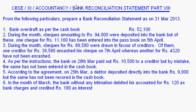As per the instructions, the bank on 28th March paid out rupees 10,500 to a creditor, but by mistake the same has not been entered in the cash book. According to the agreement, on 25th March a debtor deposited directly into the bank rupees 9,000, but the same has not been recorded in the cash book. In the month of March, the bank without any intimation debited his account for rupees 150 as bank charges and credited rupees 180 as interest. Now we have to make a bank reconciliation statement for this.